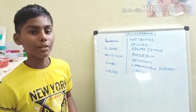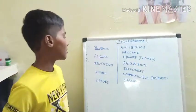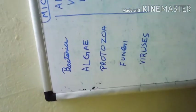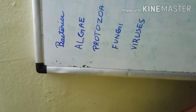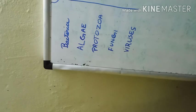Hi guys, in this video we are going to learn about microorganisms. They are of many types: bacteria, algae, protozoa, fungi, and viruses.